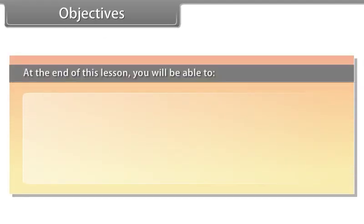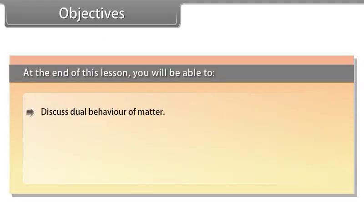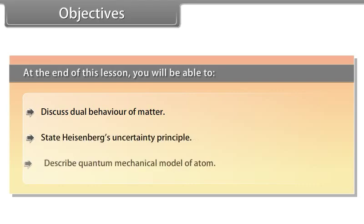Objectives: At the end of this lesson, you will be able to discuss dual behavior of matter, state Heisenberg's uncertainty principle, and describe the quantum mechanical model of the atom.